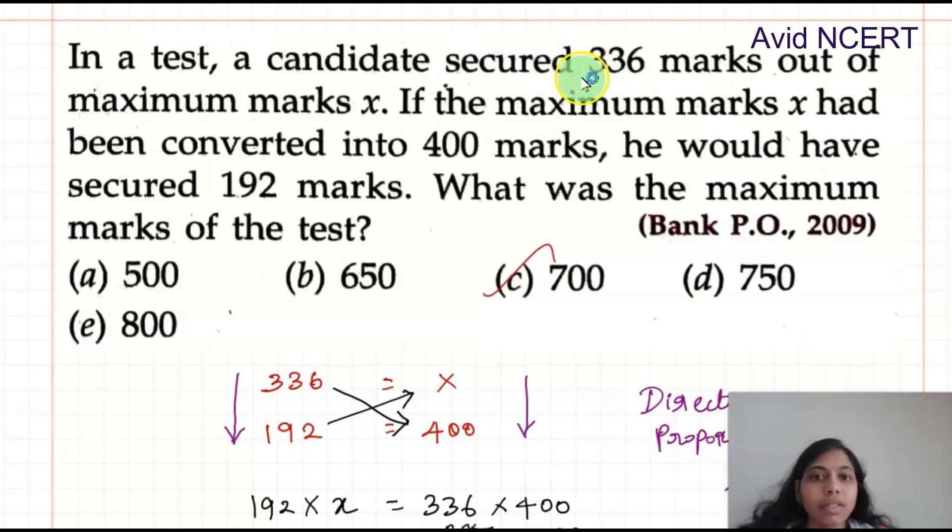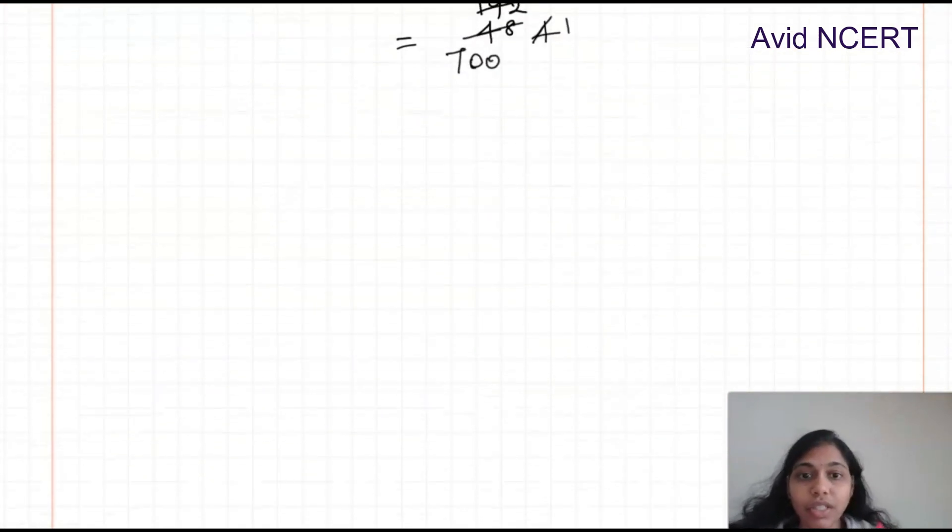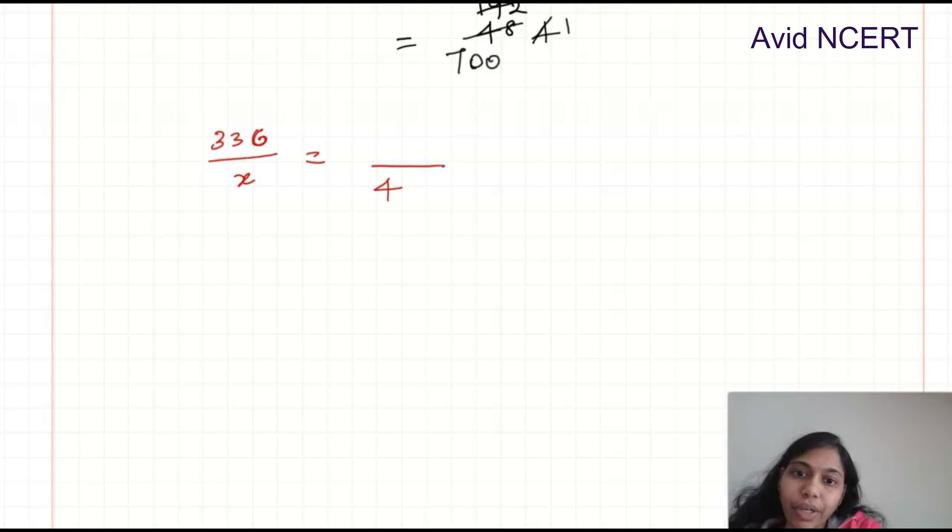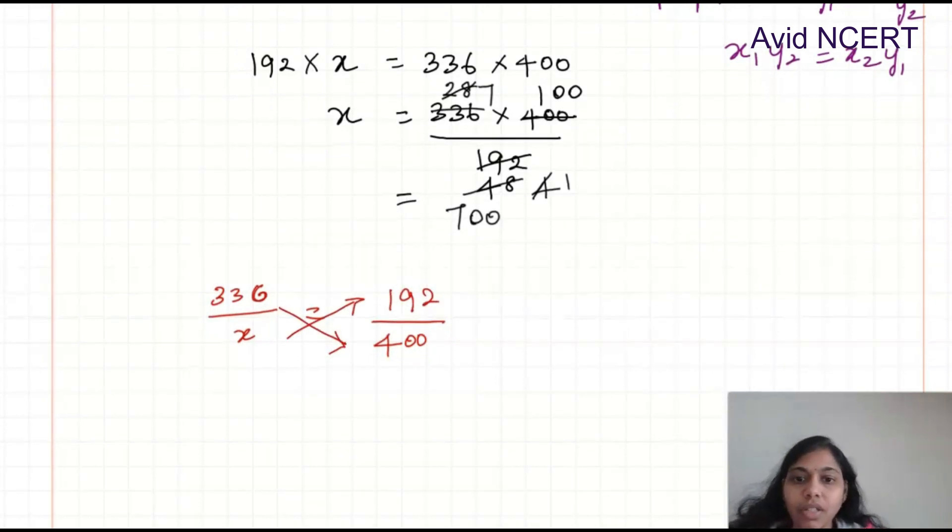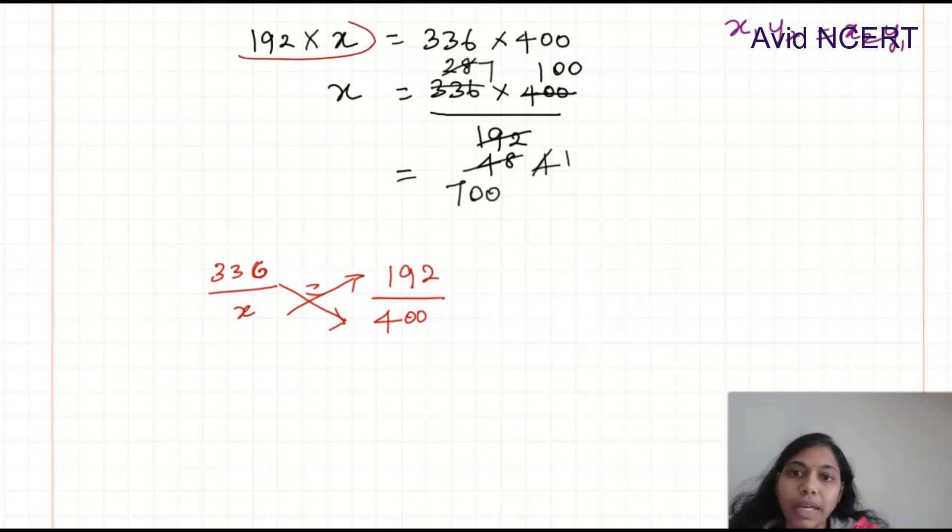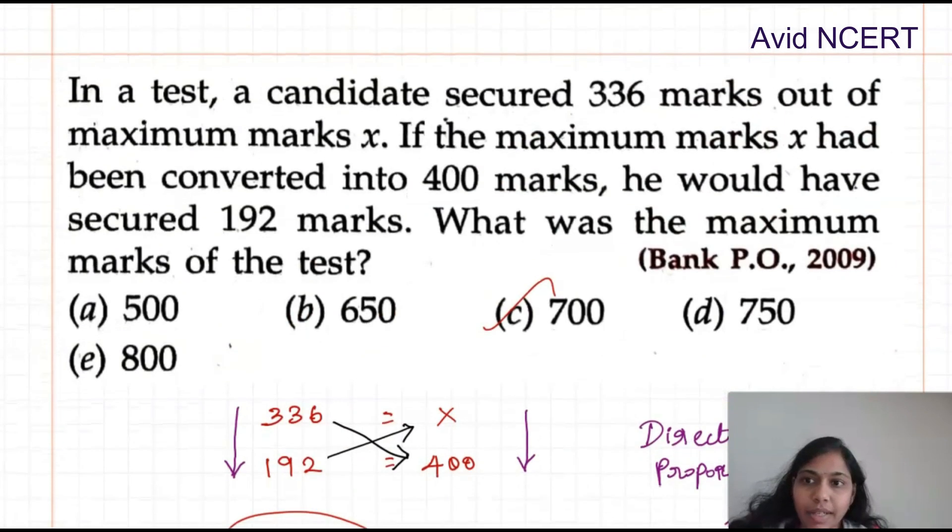This can also be done with a different method. 336 marks out of maximum marks x, which is 336 out of x. When this x is converted into 400, the marks he got was 192. You can start with this step and just do the cross multiplication and find the answer. It's still going to be the same. If you have any doubts, please let me know in the comment.